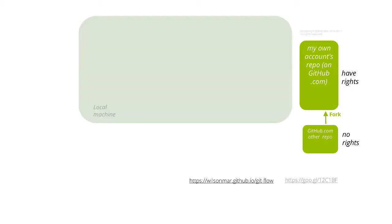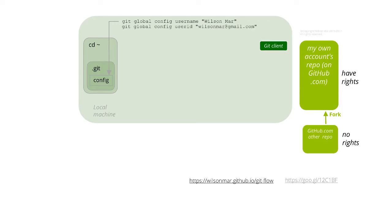To work with repositories on your local machine, install a git client. Its installation includes adding in your user home folder a .git folder containing a config file. That file stores git global commands such as username and user ID settings for attribution. Git commands are typed into a terminal shell window on a Mac or a run window on Windows.